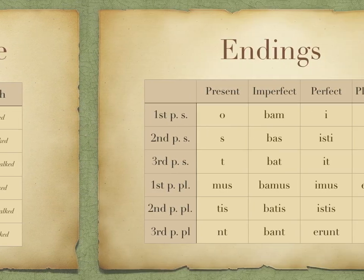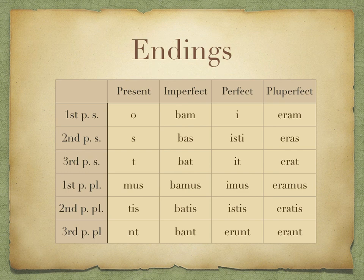When we compare across the four tenses, we can see some patterns across the endings, and I suggest you pay close attention to these to help you learn them. For example, second person singular always has an s in it; third person singular always ends in a t; -mus and -tis are quite distinctive for first and second person plural; and the -nt ending for the third person plural is always there as well.